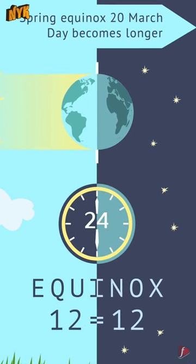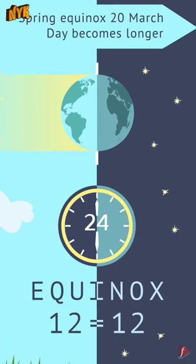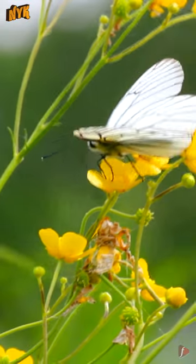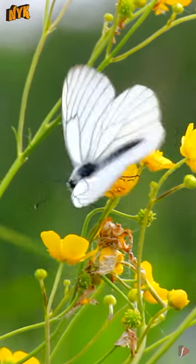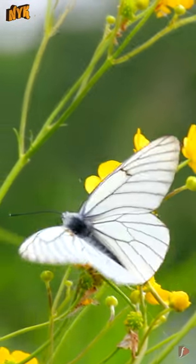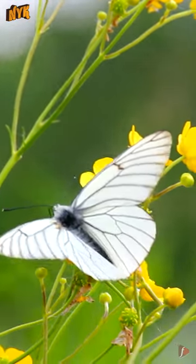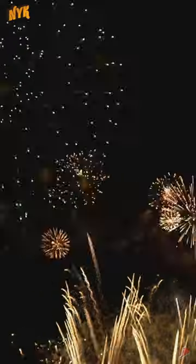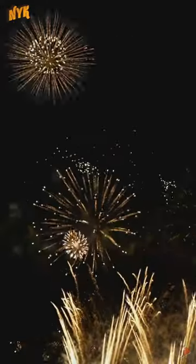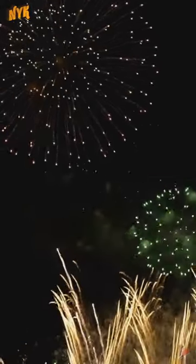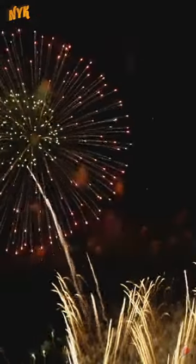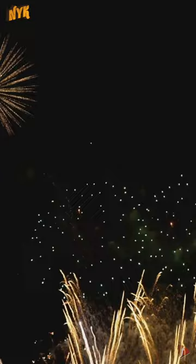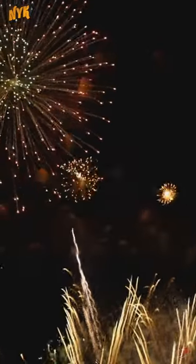Though equinoxes do not have exact 12 hours of daylight, this day marks the spring in the Northern Hemisphere according to scientists and astronomers. To mark the March equinox, many cultures around the world hold feasts and celebrate holidays and festivals.